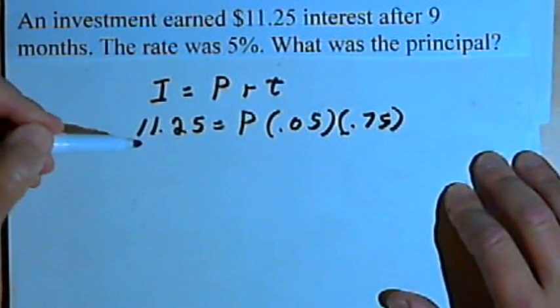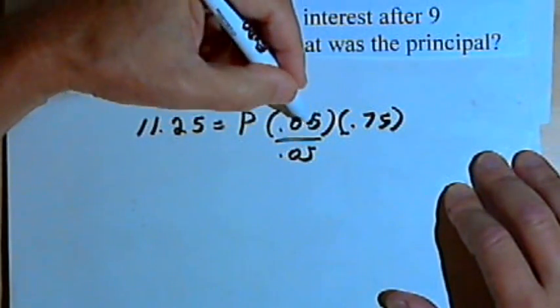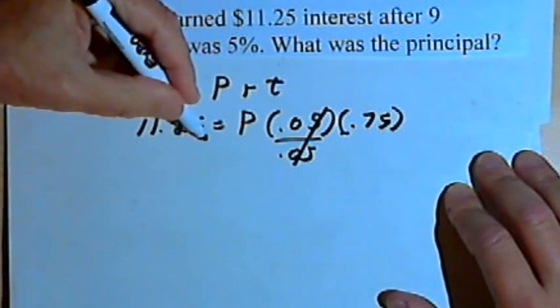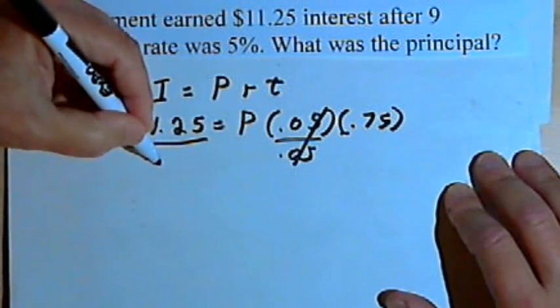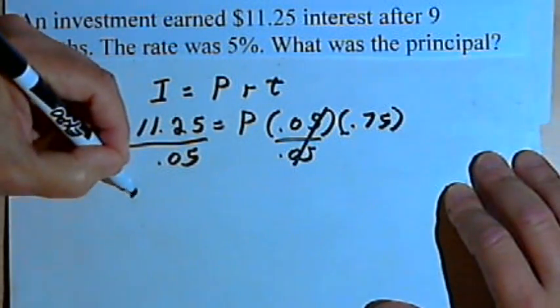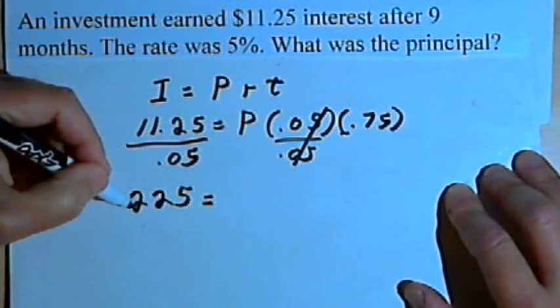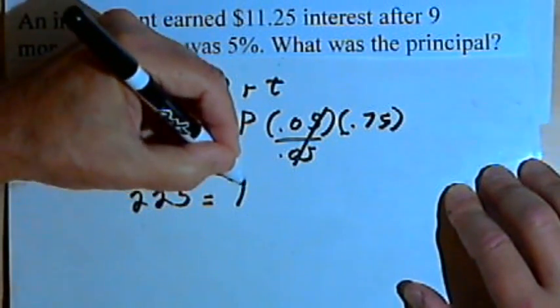I'm going to start out by dividing both sides of the equation by 0.05. If I divide 11.25 by 0.05, we find that equals 225. So that is 225 equals P times...